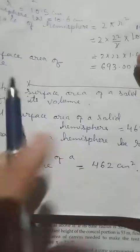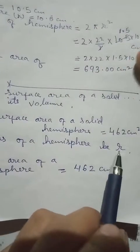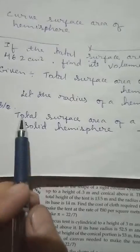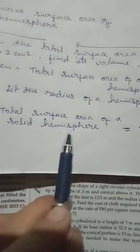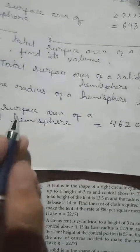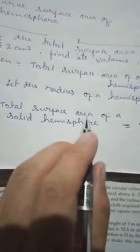Then from the question we have a total surface area of solid hemisphere equal to 462 cm square. Then the formula for total surface area, we know that it is equal to 3πr squared.